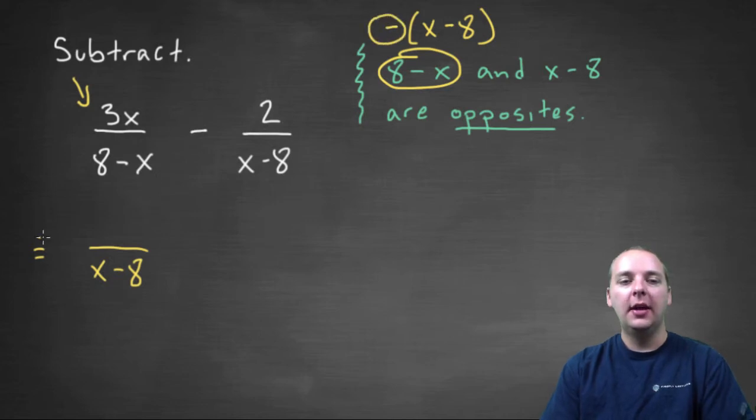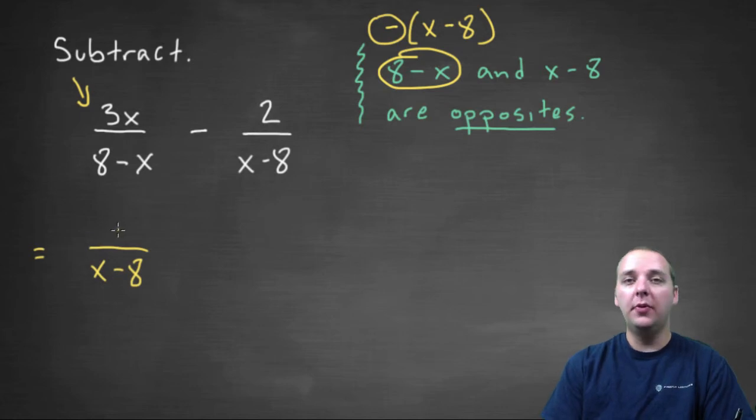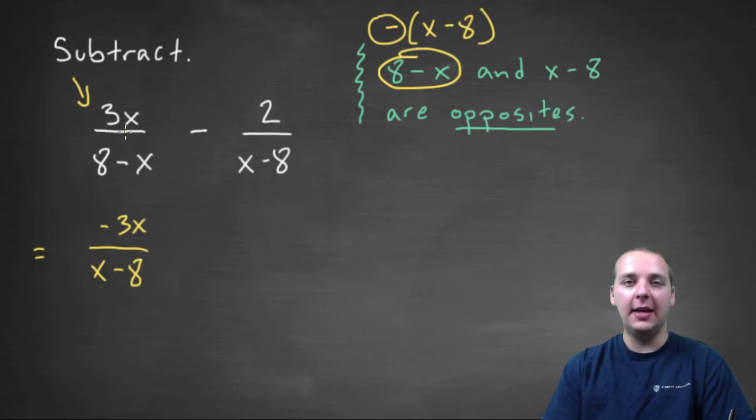and take this negative and move it either out in front of the rational expression, or even move it up to the numerator, which is what I think I'll do. So we'll say that this is the same as -3x over x-8,